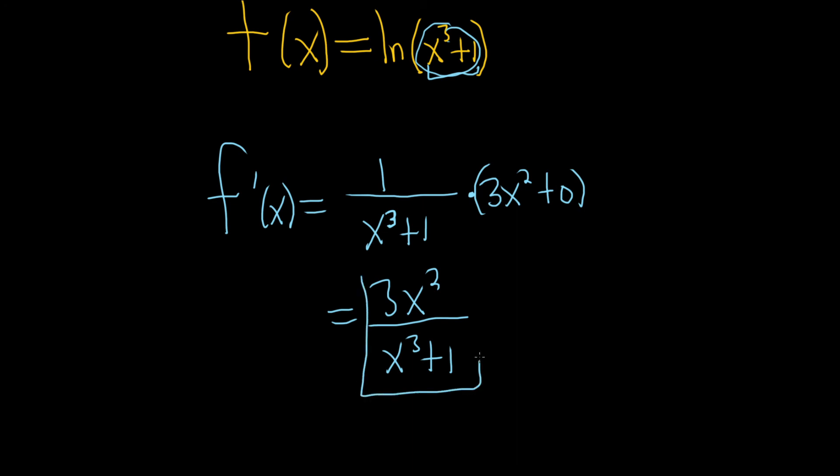And that would be the final answer. You just basically multiply the 3x squared times the 1. So that's it.